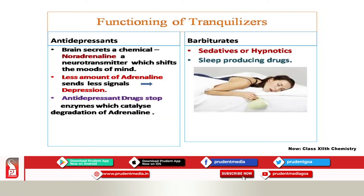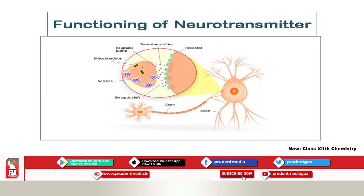Barbiturates are sedative-hypnotic drugs — they produce sleep. In the diagram, the neurotransmitter (shown in purple) binds to the receptor of another nerve, sending impulses from neuron to neuron. If neurotransmitters are released in insufficient amounts, the signals will not be sent.